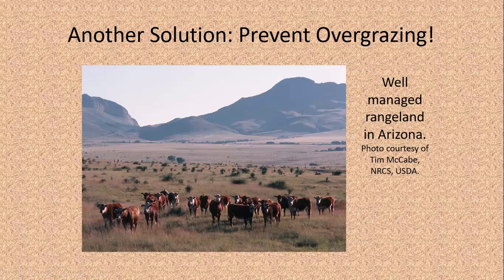Overgrazing is another issue — we talked about how overgrazing can lead to desertification. This is a picture of a well-managed rangeland in Arizona. You can see that there's grass all over; the cows have not overeaten, and they've maintained a healthy population of grass to hold that soil in place.